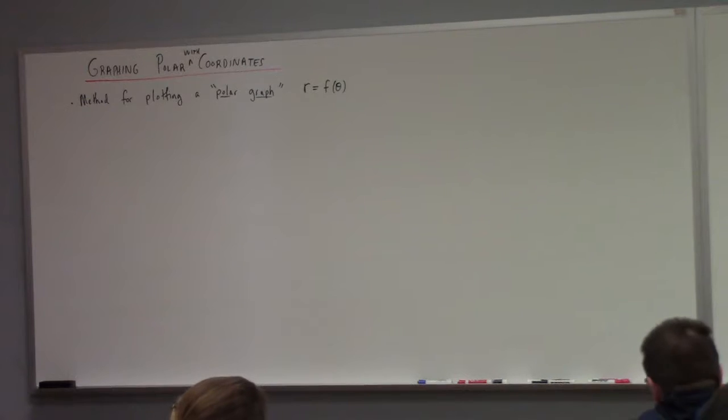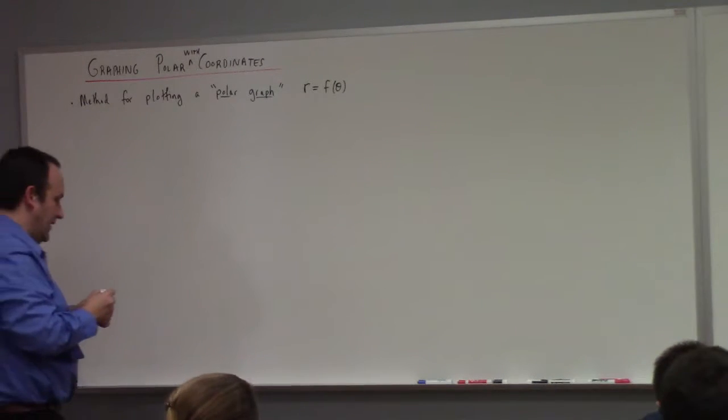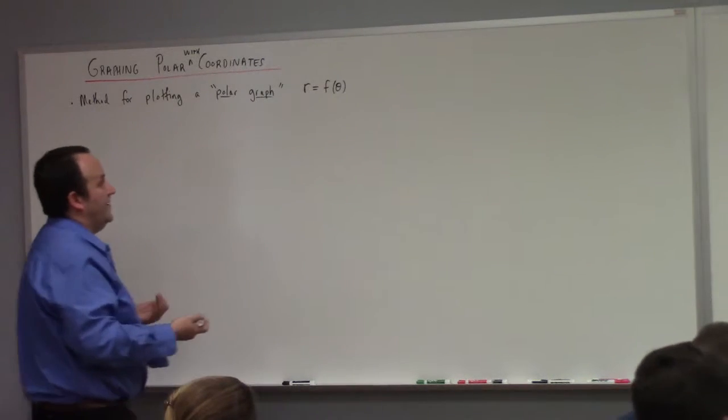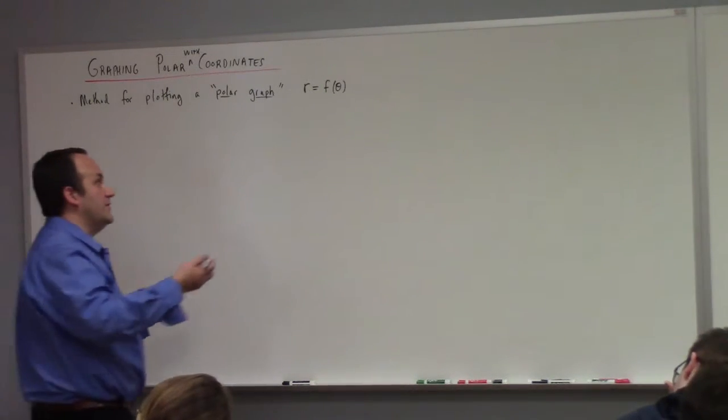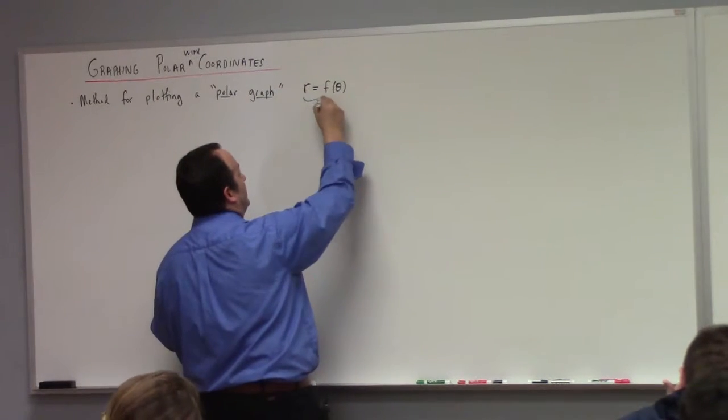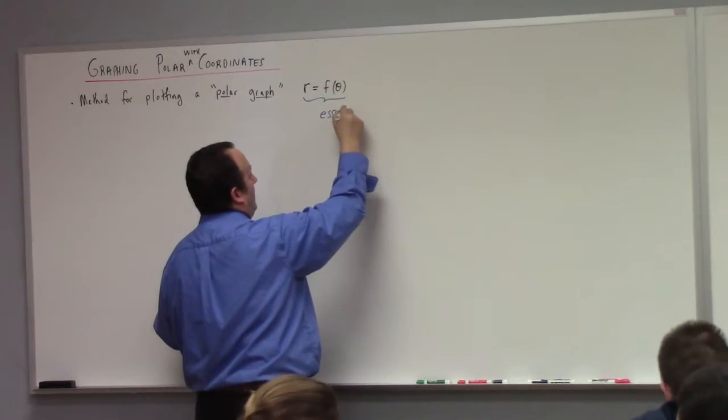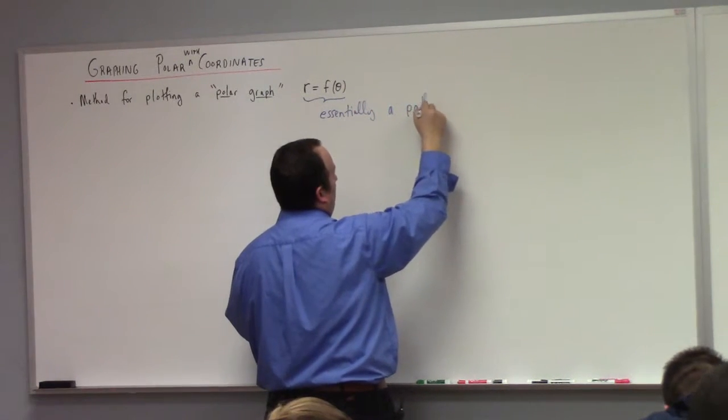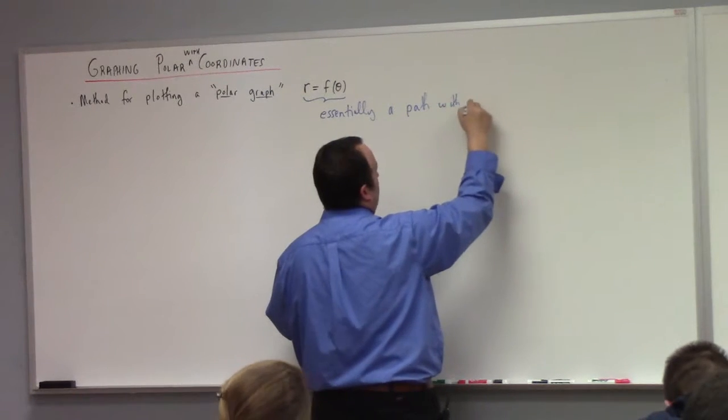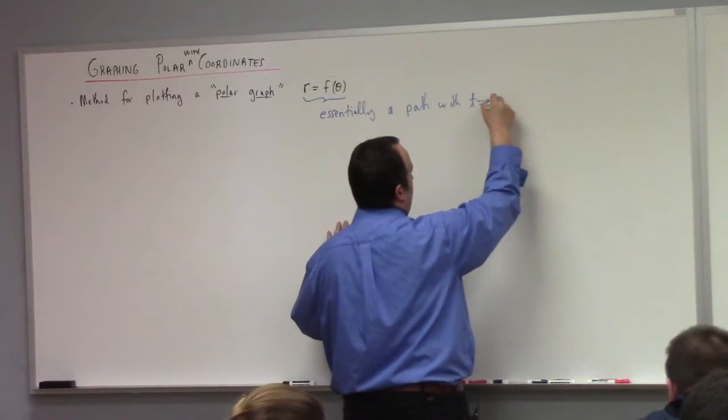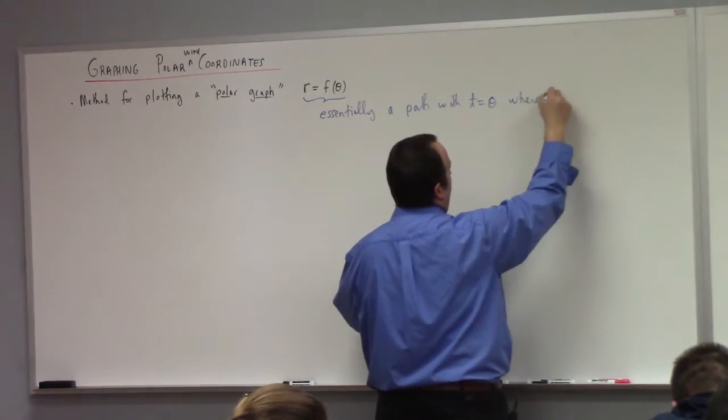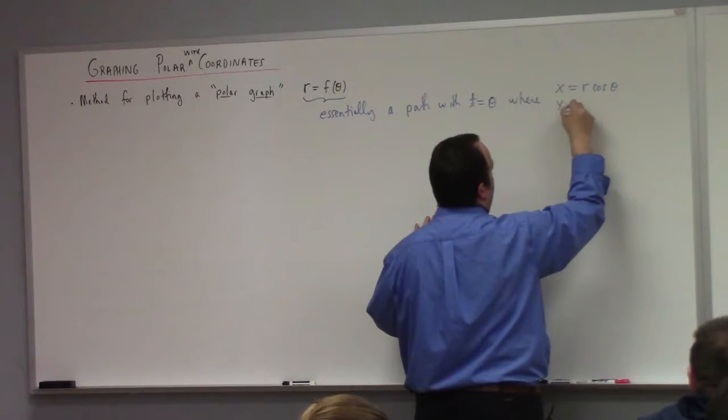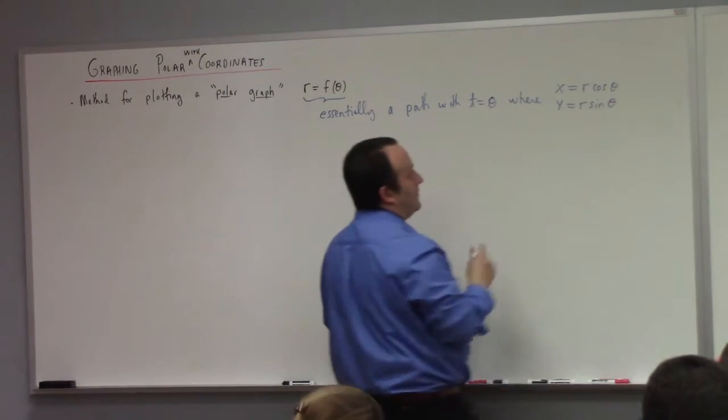Now, I think in terms of things you already know, a polar graph really is a parametrized curve. We could look at it that way. See, this is essentially a path or parametrized curve with t equals to theta, where x equals to r cosine theta and y equals to r sine theta. So technically speaking, we're looking at the path r of t equals to f of t cosine t, f of t sine t.